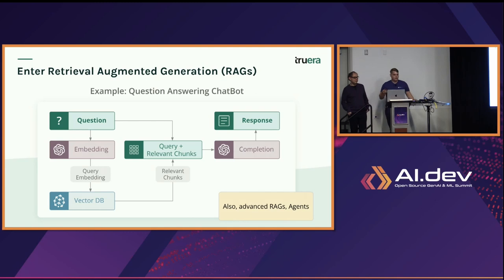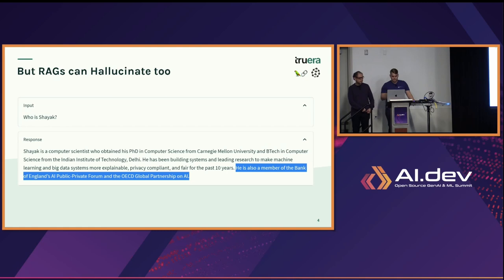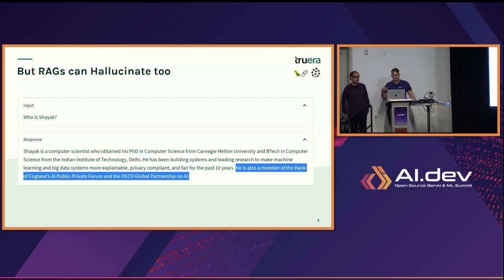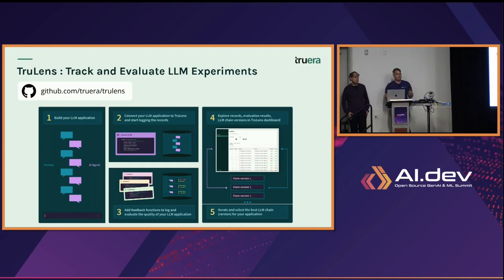This brings me to the hot take that we should consider these models to be hallucinatory until we prove otherwise. The RAG pattern is the way a lot of us have started to solve this problem. But RAGs can hallucinate too. We built a RAG on our company website using Pinecone, and asked 'Who is Chiac?' A lot of the response was good, but we got a last sentence about being a member of the Bank of England's AI public-private forum — that was actually about a different team member named Shamik. What happened was a bad retrieval: we got context about Chiac and context about Shamik, passed them both to the LLM, and got this malformed hallucination answer.